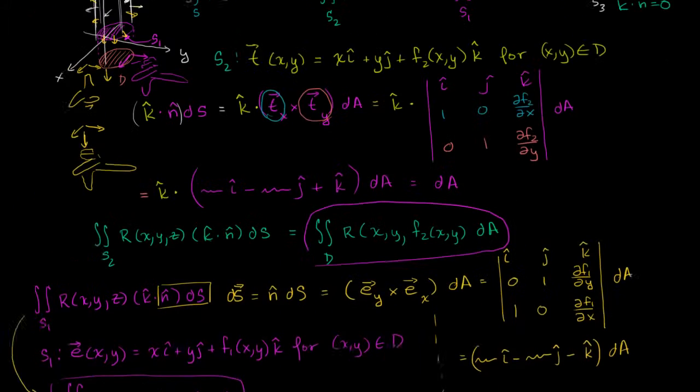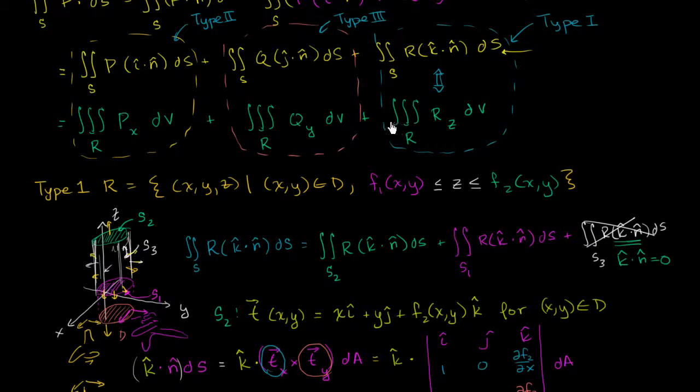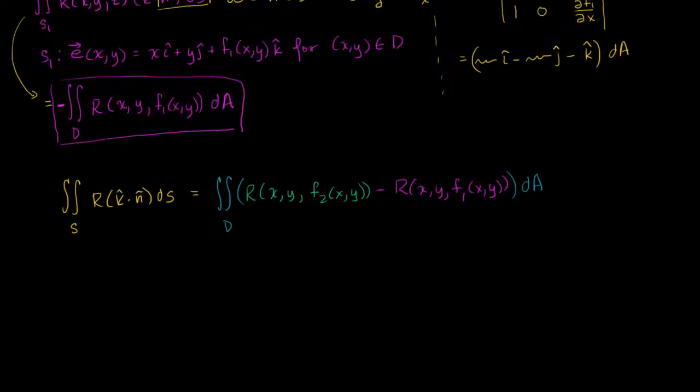Now we can work on the triple integral part of our problem or our proof. I can rewrite that as the triple integral over our region, which we're assuming is a type 1 region, of the partial of r with respect to z, dV.